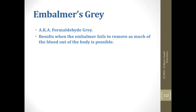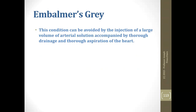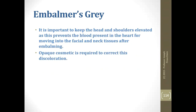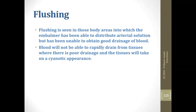Embalmer's gray happens when you cannot or neglect to remove as much blood as possible from the body. The condition can be avoided by injecting a large enough volume of arterial solution accompanied by thorough drainage and aspiration. Keep the head and shoulders high as discussed. If you do get embalmer's gray, you're breaking out the opaque foundation and covering it up. Flushing occurs when arterial solution is going everywhere but you're not getting enough drainage, so it's coagulating in the upper extremities and head.